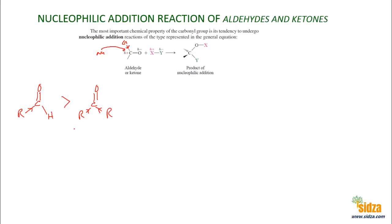Aldehydes are more reactive than ketones because in aldehydes there is one alkyl group and in ketones there are two alkyl groups. These alkyl groups donate electrons to the carbonyl group, decreasing its electron deficiency and therefore decreasing its reactivity. That's why in general aldehydes are more reactive than ketones towards the nucleophilic addition reaction.